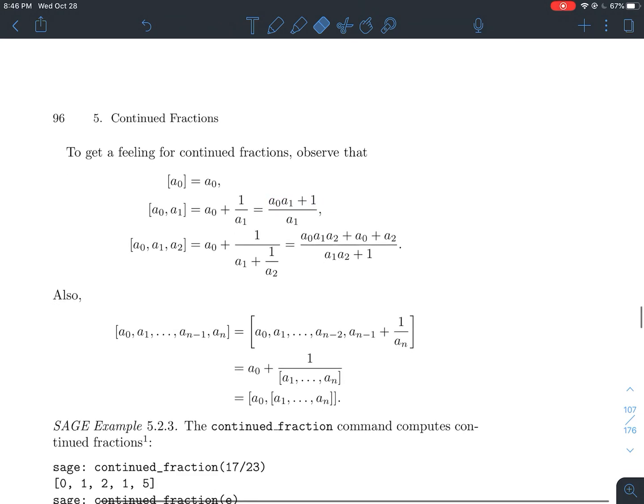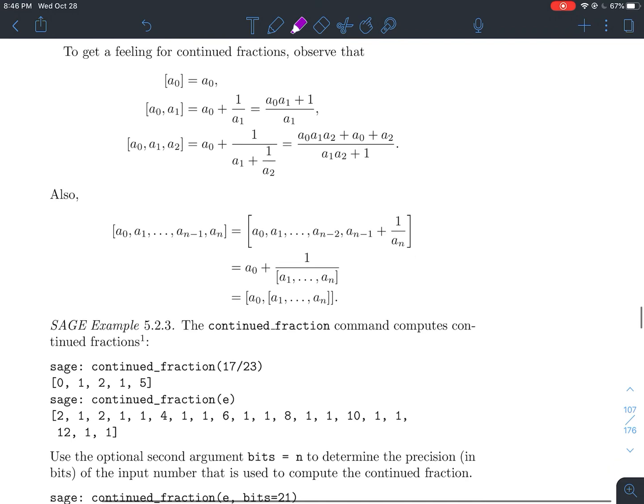And to keep going with this, what else? [a0, a1, a2]. a0 comes first, plus 1 over the rest of this stuff. And what should I have then? So I'd have 1 over, a1 is next, plus 1 over, what's to the right of a1? So plus 1 over a2 here.